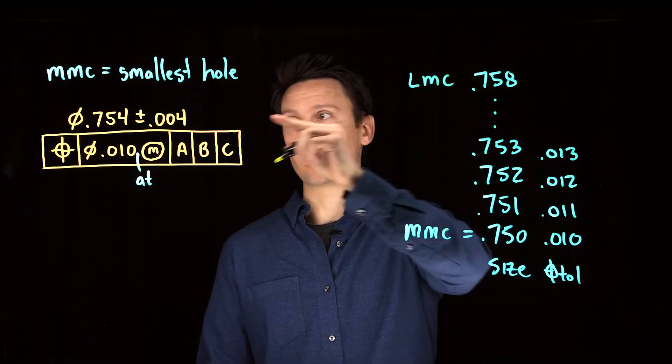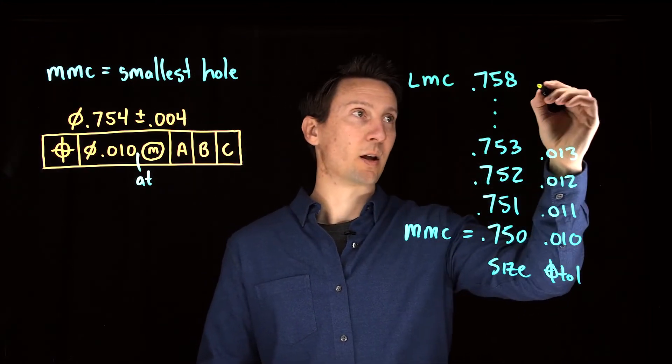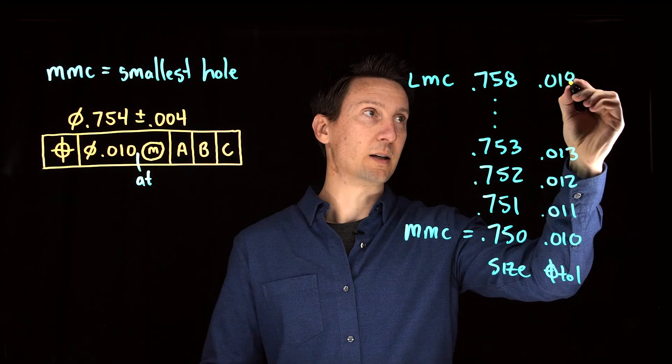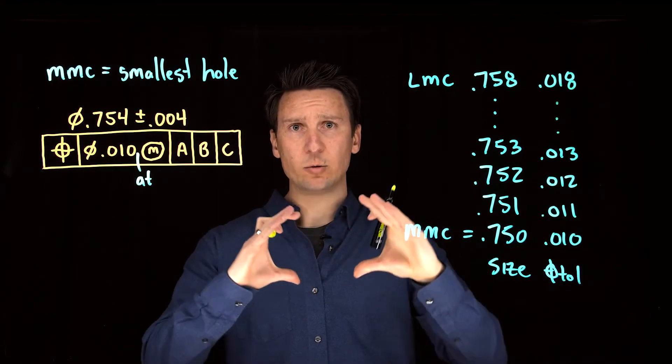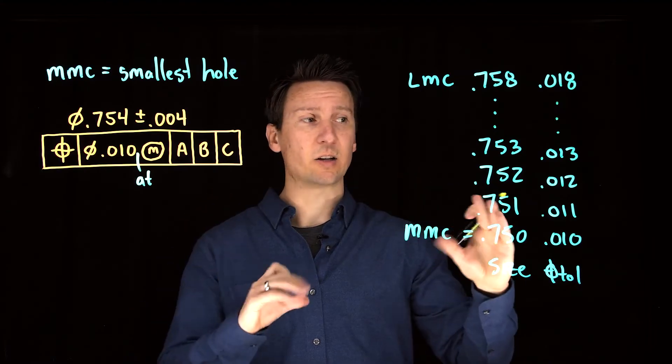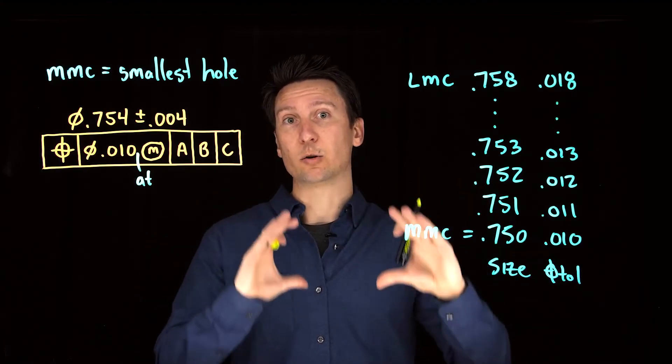That's our least material condition plus four. That is where you'll get 18 thou. So the MMC modifier says as you make the hole larger in size, then you get an increase in your position tolerance.